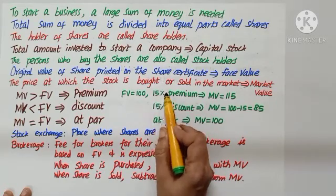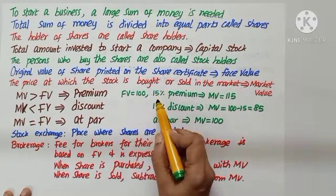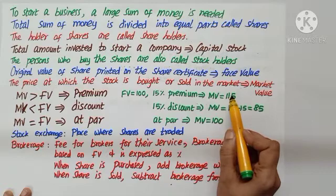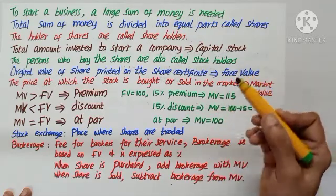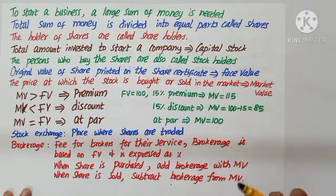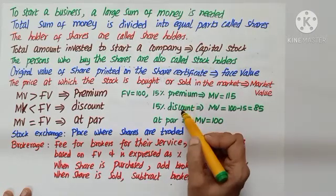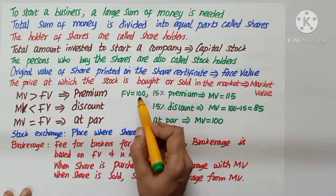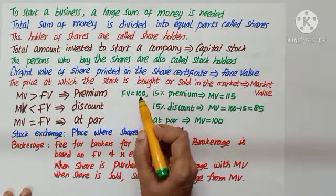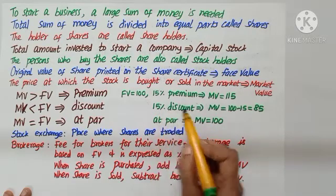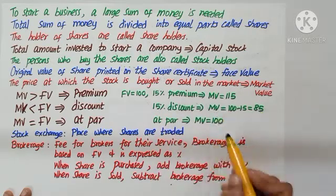I can sell it at a premium of 15. So this tells me 100 plus 15 is my market value. So when I sell for more amount, I call premium. Sometimes I may sell it at a discounted rate. Yes, 100 is the face value, but I may sell it giving a discount of 15%, so 85 is my market value.